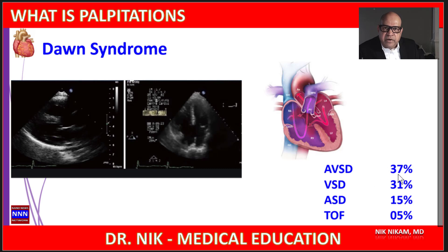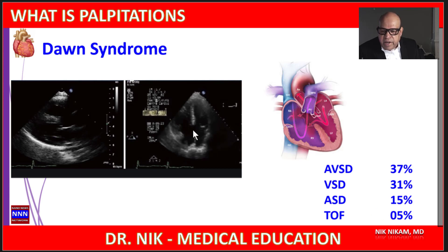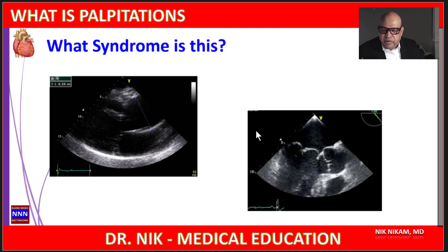The atrioventricular septal defect is seen in 37 percent of patients. In 31 percent we may see isolated ventricular septal defect. Isolated atrial septal defect may be found in 15 percent, and tetralogy of Fallot is seen in approximately 5 percent. Whenever you see atrioventricular septal defect, always think about Down syndrome if that's the best choice among the answers.